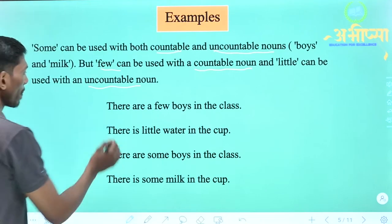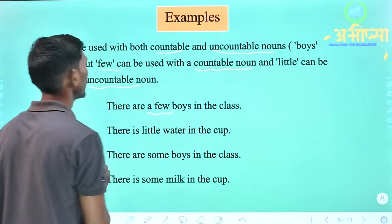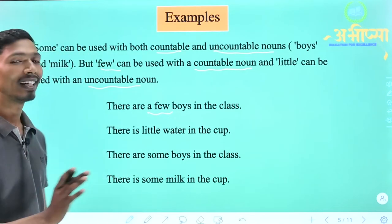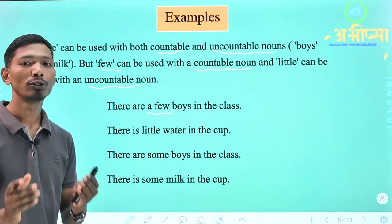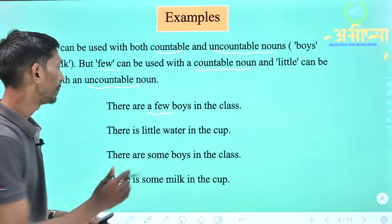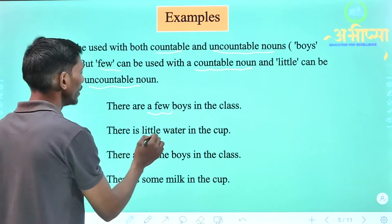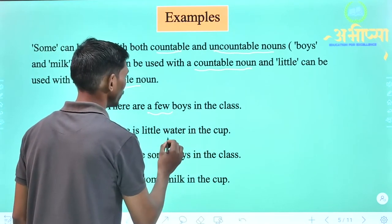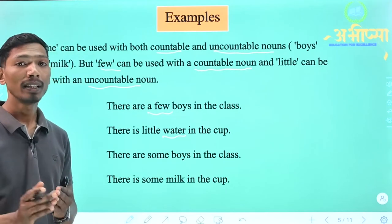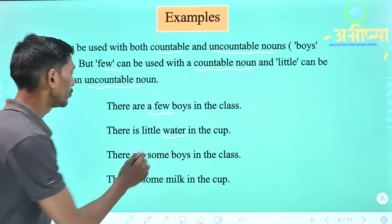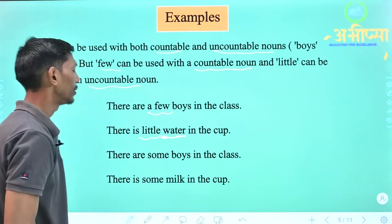Yahan par kuch examples hain. 'There are a few boys in the class' — yaani kaksha mein kuch ladke hain. Boys ko hum gin sakte hain: one boy, two boys, three boys. Isliye yahan par humne 'a few' ka use kiya hai. Vaisi hi, 'There is little water in the cup' — water, yaani paani ko hum nahi gin sakte. Cup mein kuch paani hai. Toh water ko hum nahi gin sakte hain, isliye yahan par humne 'little' ka use kiya hai.